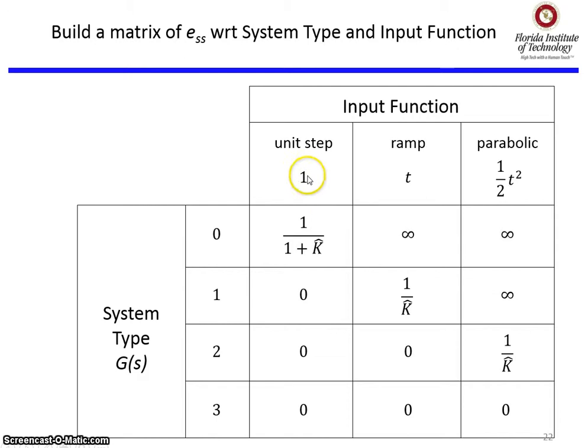So the way you use this table is, and again, this applies to G(s) with negative unity feedback in the system, like we showed previously.